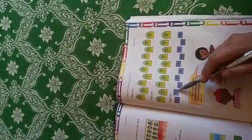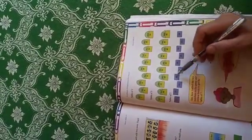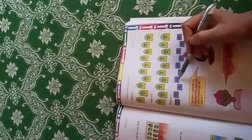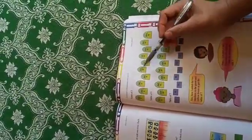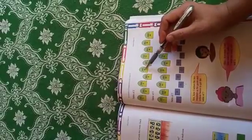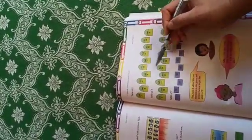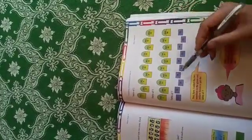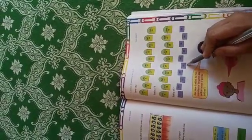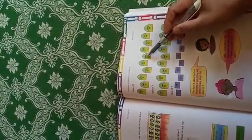Two fives are ten, five fives are twenty-five, so ten plus twenty-five makes thirty-five. Two sixes are twelve, five sixes are thirty, twelve plus thirty makes forty-two.